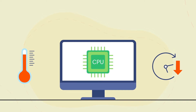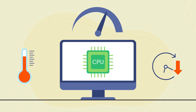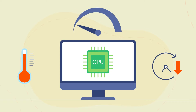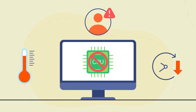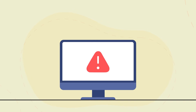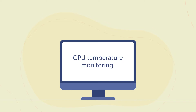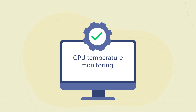An overheating CPU can slow down network devices or shut them off completely, greatly affecting the user experience. Spikes in CPU temperature can be a symptom of various issues, which is why CPU temperature monitoring is critical for businesses striving to perform their very best.